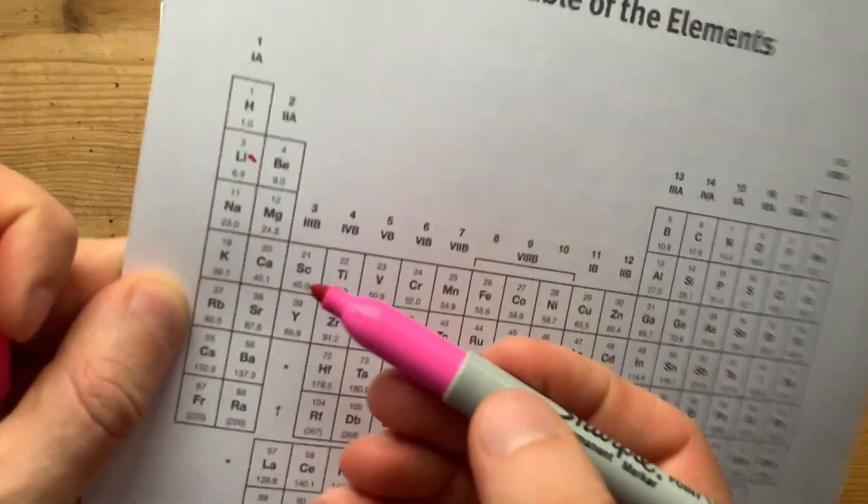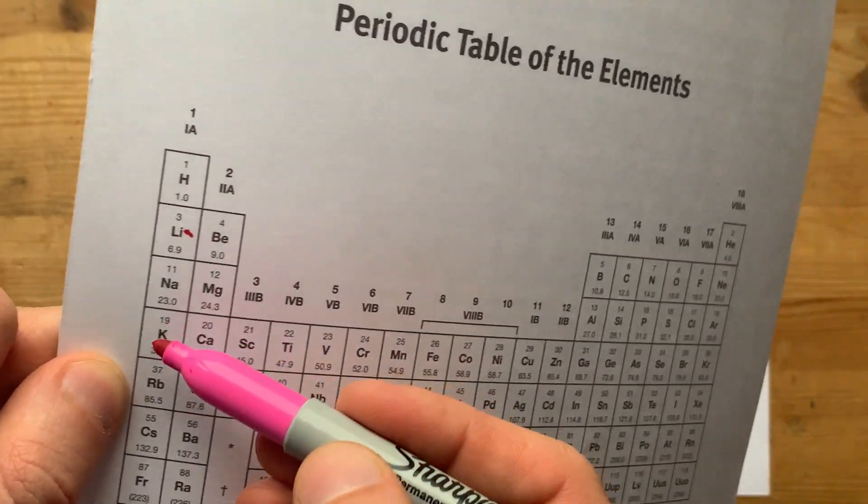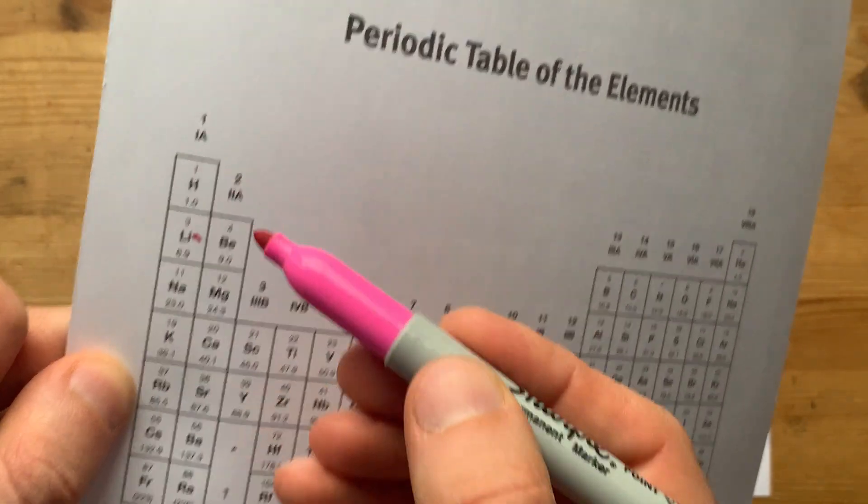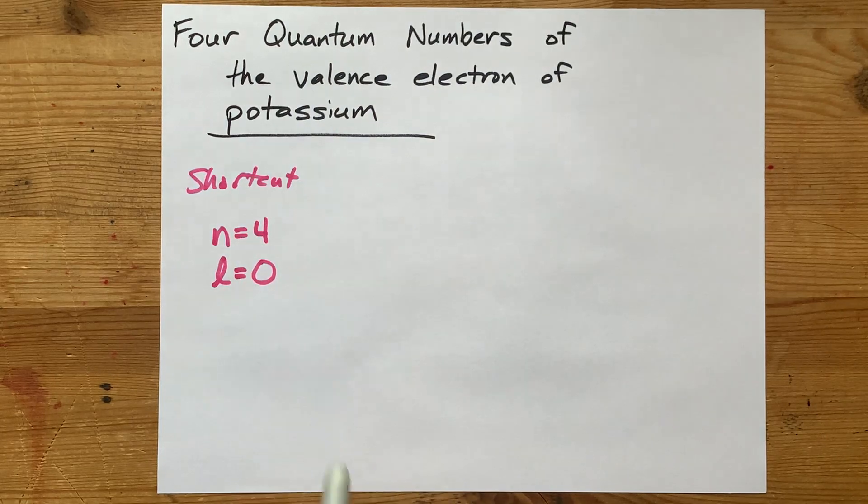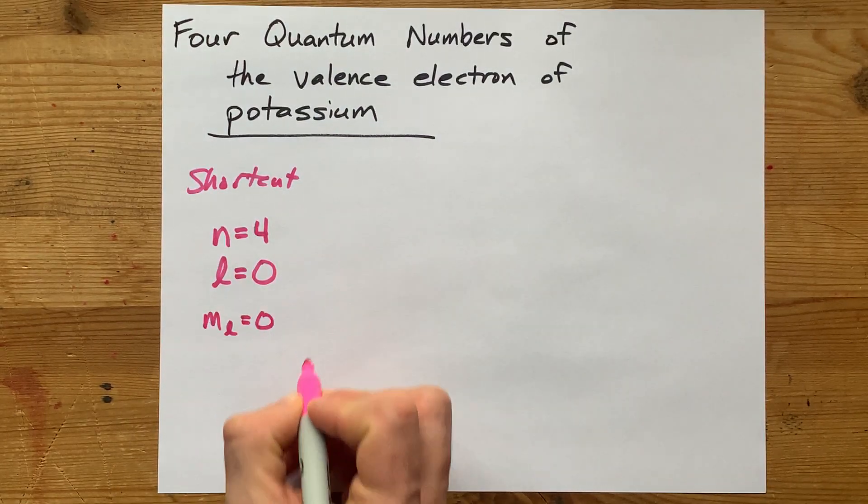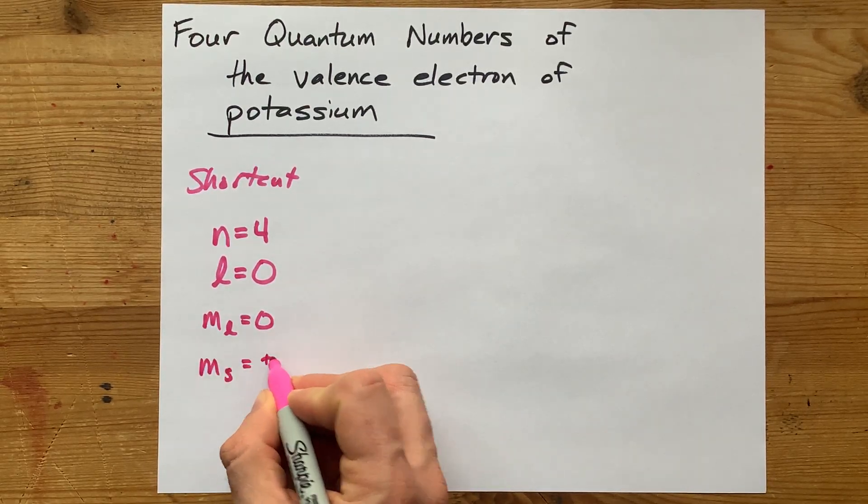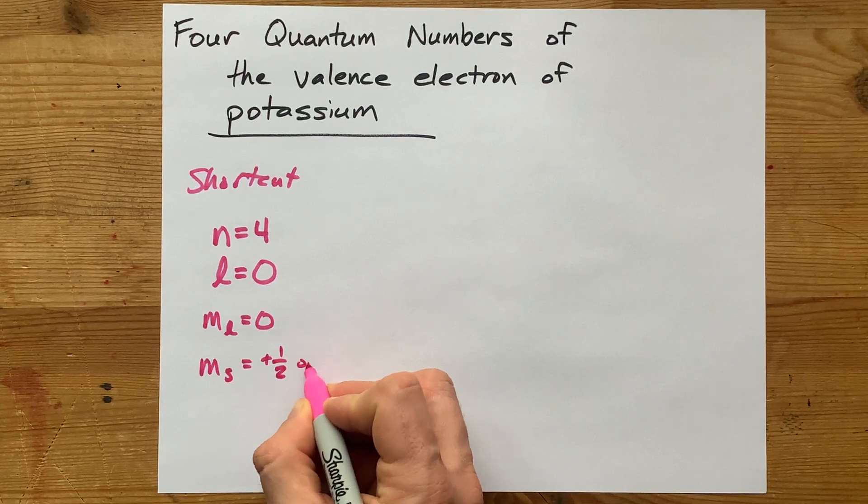Now that's 4, it's outer atom only. There are electrons in potassium at N equals 3, N equals 2, N equals 1, but we were asked for the outer atom. When L is 0, you know that ML is limited to 0 as well, and then MS can either be plus 1 half or minus 1 half.